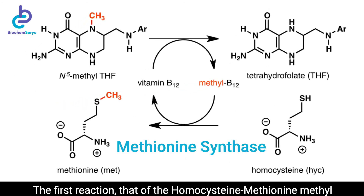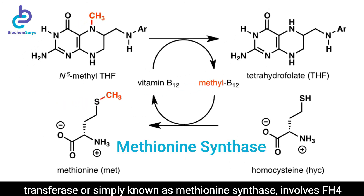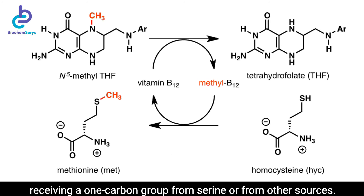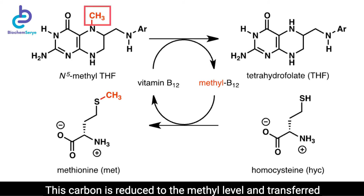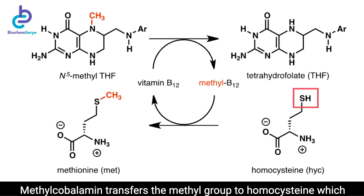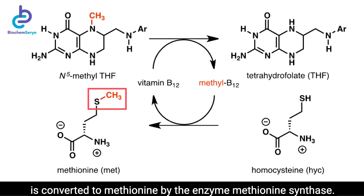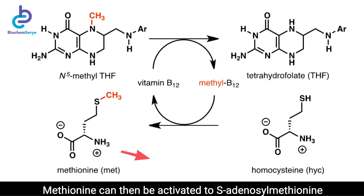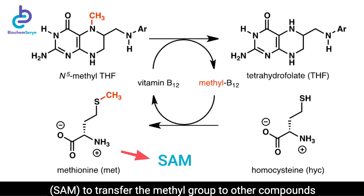The first reaction, that of homocysteine-methionine methyltransferase, or simply methionine synthase, involves FH4 receiving a one-carbon group from serine or from other sources. This carbon is reduced to the methyl level and transferred to vitamin B12, forming methyl B12 or methylcobalamin. Methylcobalamin then transfers the methyl group to homocysteine, which is converted to methionine by methionine synthase. Methionine can then be activated to S-adenosylmethionine to transfer the methyl group to other compounds.